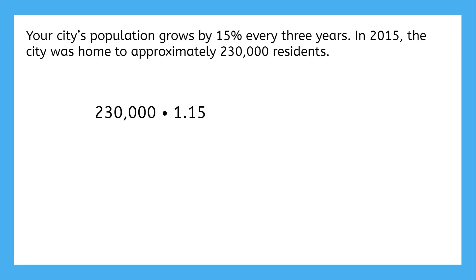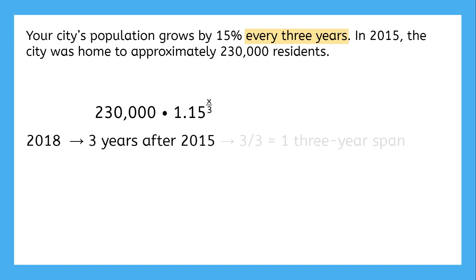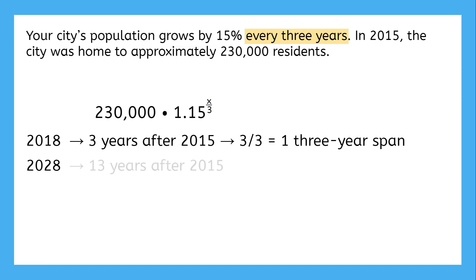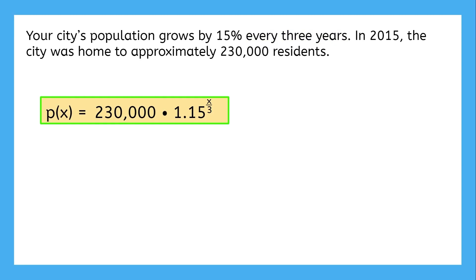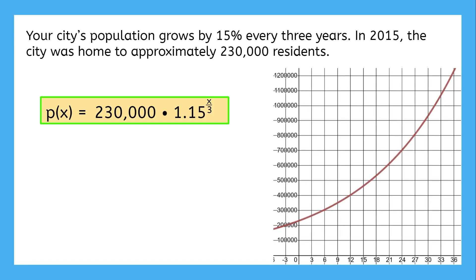There is one more super important piece of information: that 15% is applied every three years, not every single year. So we can't just count the number of years — we have to split it into chunks of three years. If we want to know the population in 2018, that's three years after 2015, so the 15% would only be applied once. If instead we wanted the population in 2028, that's 13 years past 2015, so the 15% would be applied four and a third times. Dividing by three keeps the 15% occurring every three years. Now we've got our function for the population any year after 2015: starting at 230,000 people, growing by 15% every three years. You can graph this function to see the exponential growth.